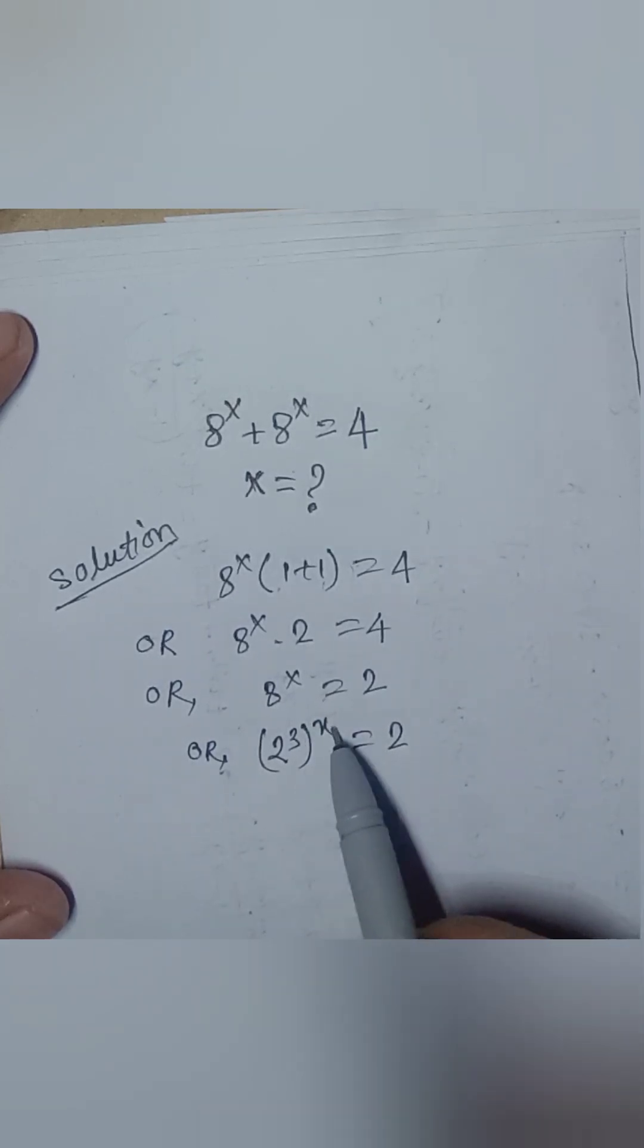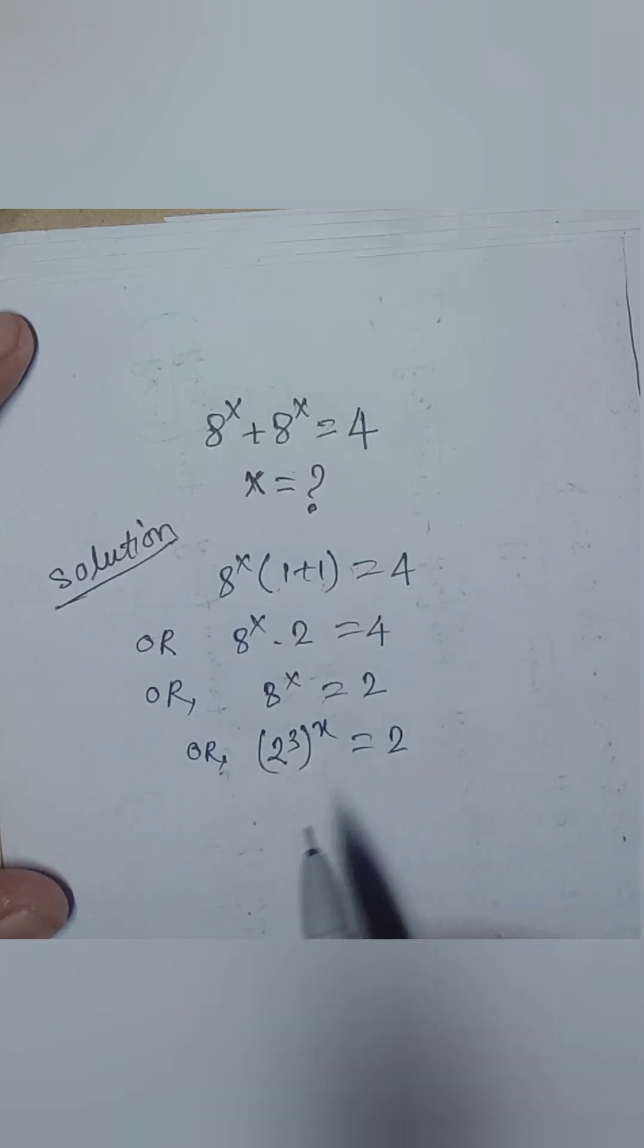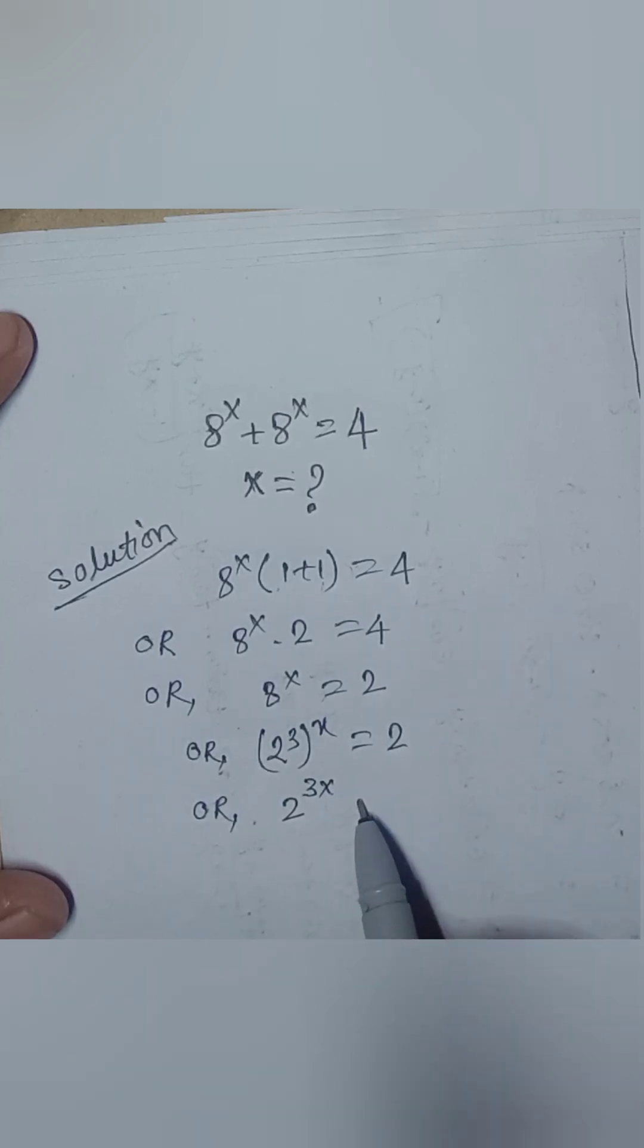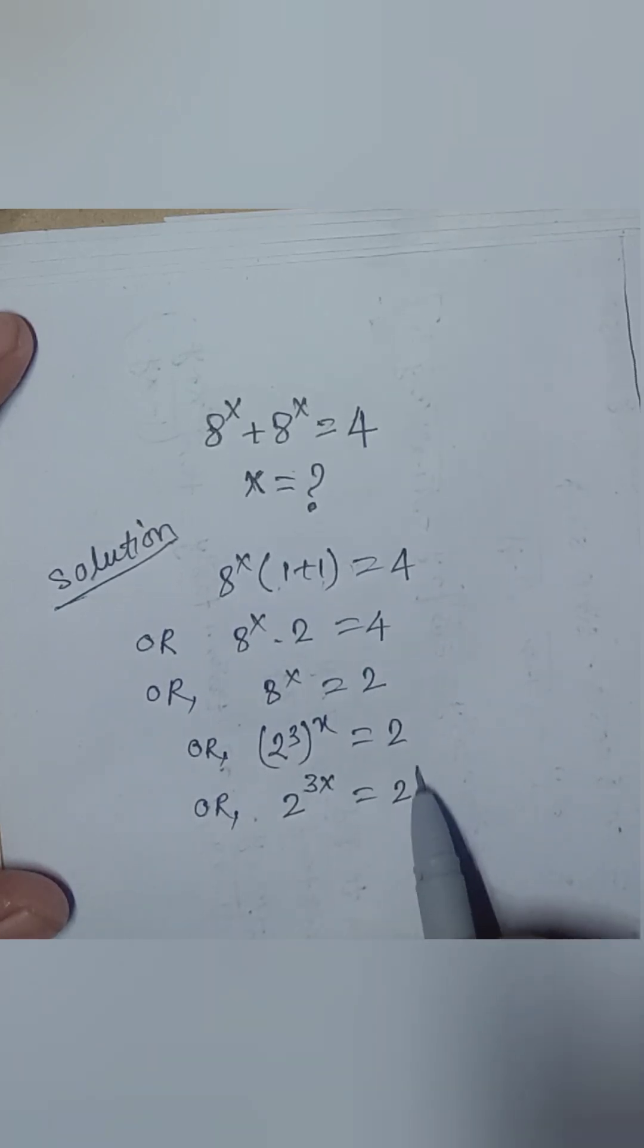Now, the powers will be multiplied. So, 2 to the power 3x is equal to 2 to the power 1.